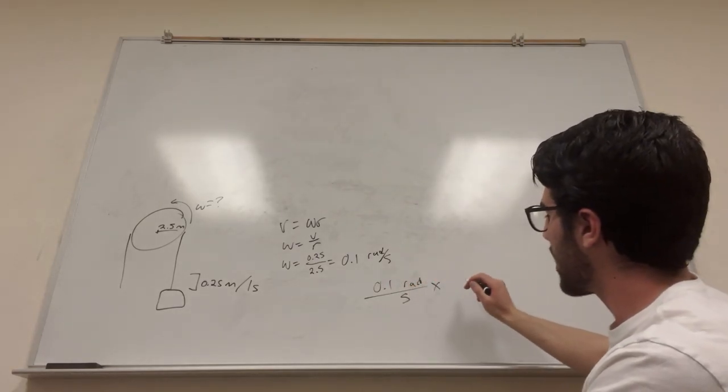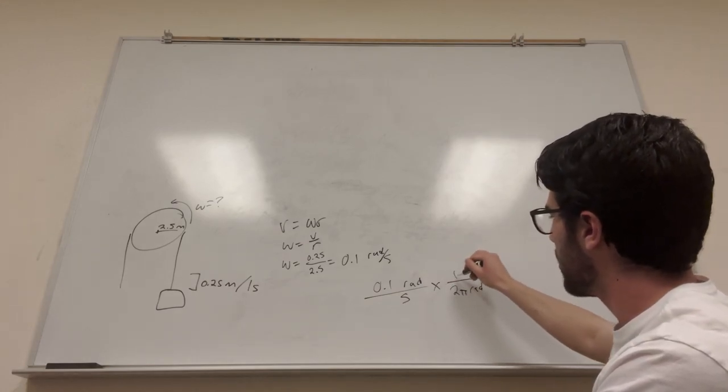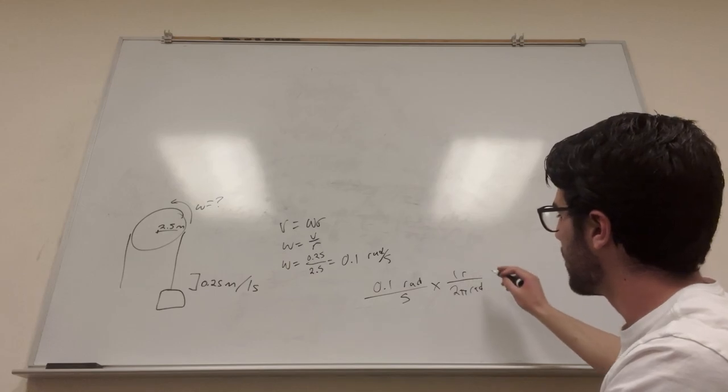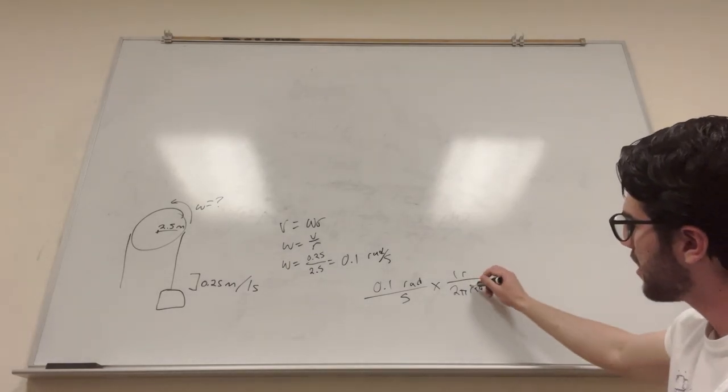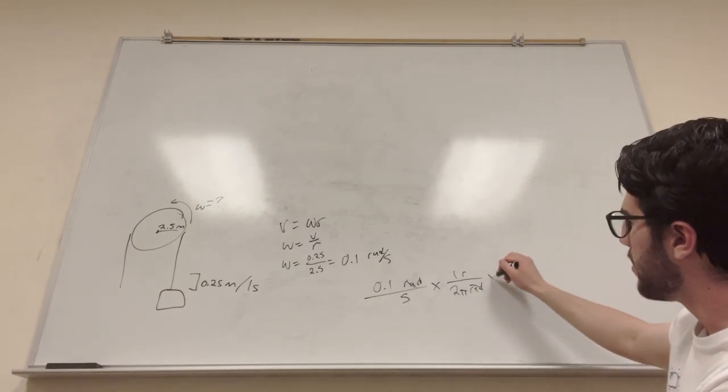So then you can get rid of the radians, because 2π radians is equal to 1 rotation. So the radians are going to cancel. So you're just going to have to divide by 2π, but then at once per minute.